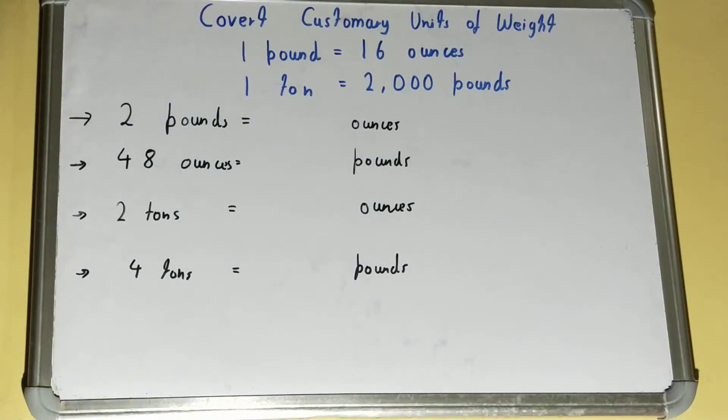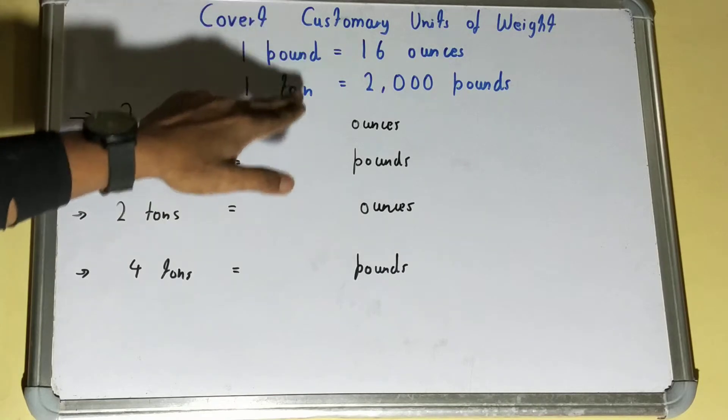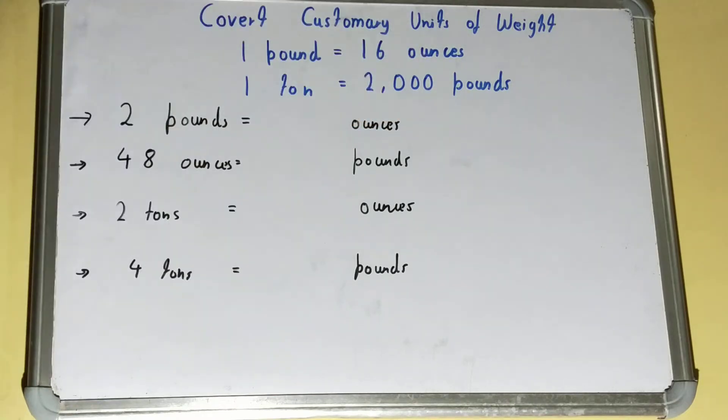Hello friends, in this video I'll be helping with the conversion of customary units of weight. The customary units of weight are pounds, tons, and ounces. We can interchange or convert from one unit to another, which we will try to understand with the help of examples.